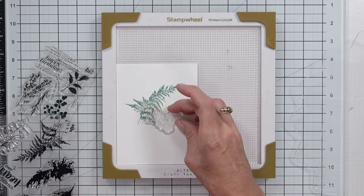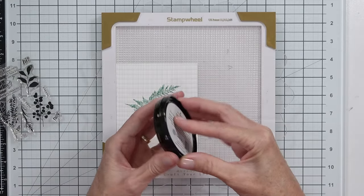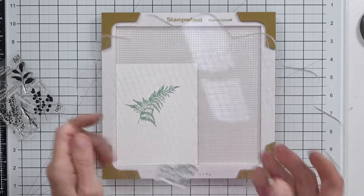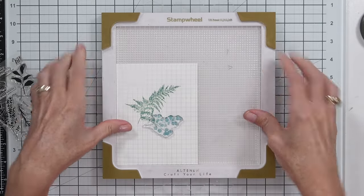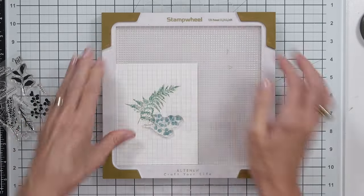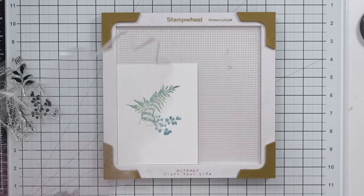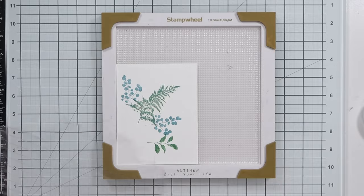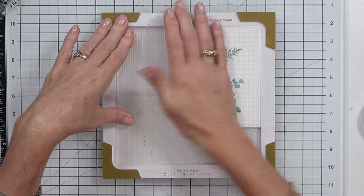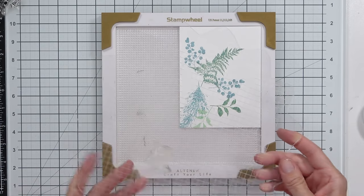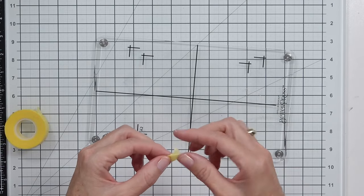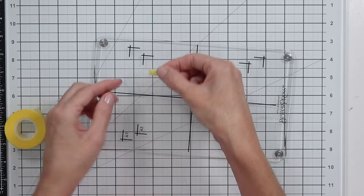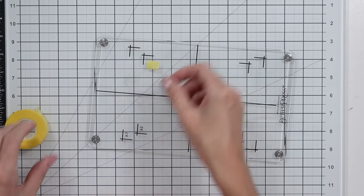This is going to be the panel for the blind letterpress, and what that simply means is that we are going to have the impression or the debossed kind of look, but we're not going to be using any ink. So blind letterpress is basically exactly the same as letterpress, but you're not adding the ink.